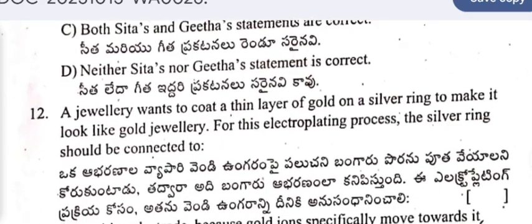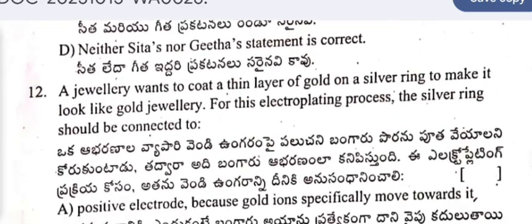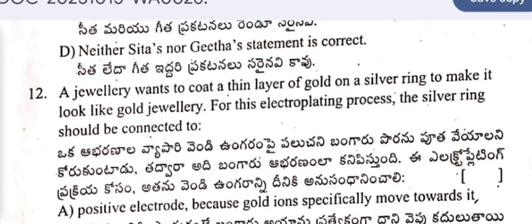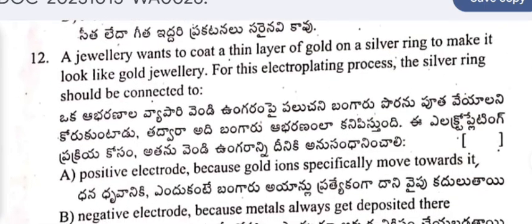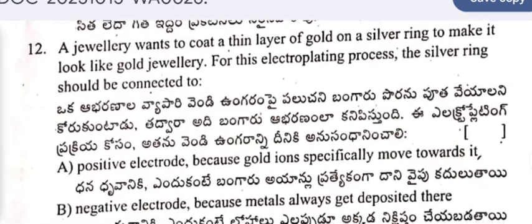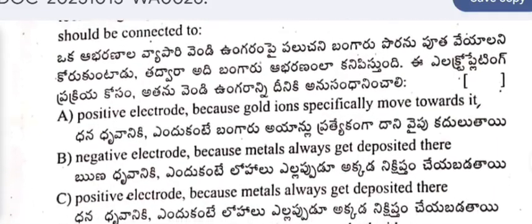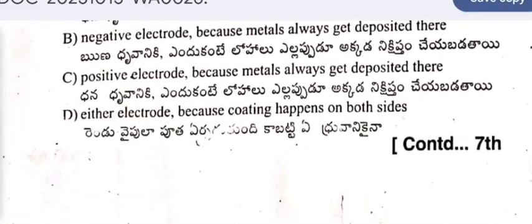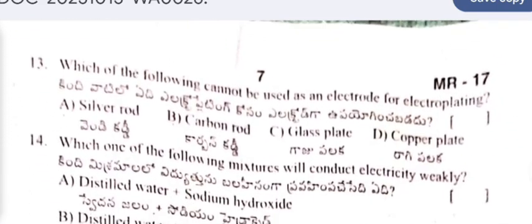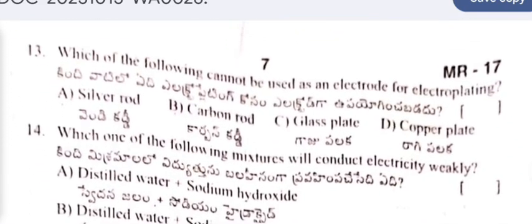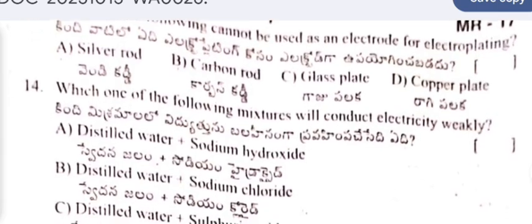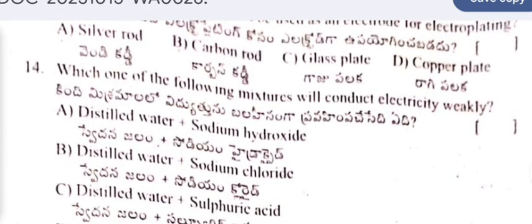Question 11: A jeweler wants to coat a thin layer of gold on a silver ring to make it look like gold jewelry. For this electroplating process, the silver ring should be connected to which terminal? Options A, B, C, D are given — look up the correct one. Question 12: Which of the following cannot be used as an electrode for electroplating? Silver rod, carbon rod, glass plate, or copper plate?